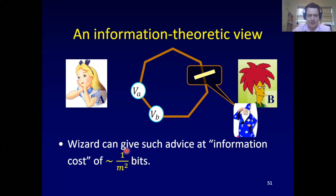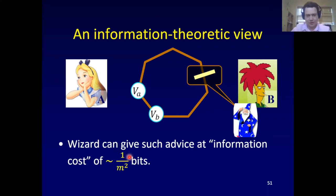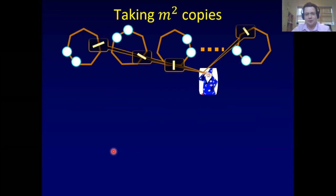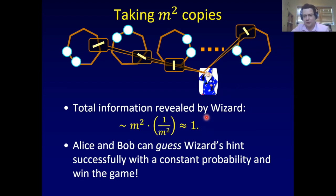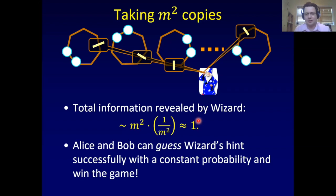It turns out a wizard of Oz giving advice about where to cut needs to reveal only about one over m-squared bits of information in the sense of Shannon information. When you take m-squared copies, the wizard can give all this advice, worth about one bit total — and you can guess one bit of information with constant probability, since that's almost the definition of what one bit means. So with m-squared copies, they can imagine a wizard and win with constant probability.